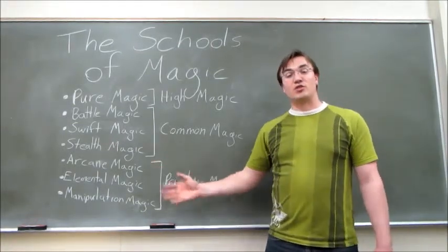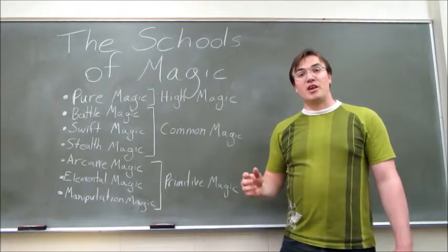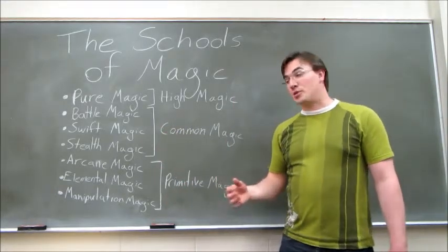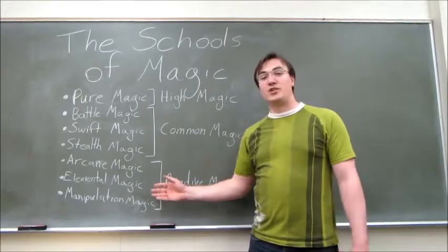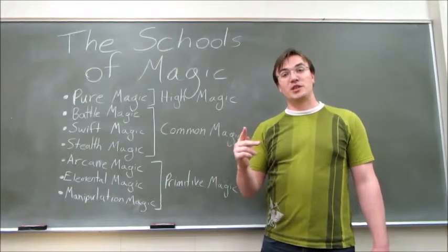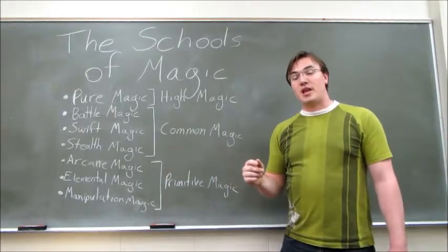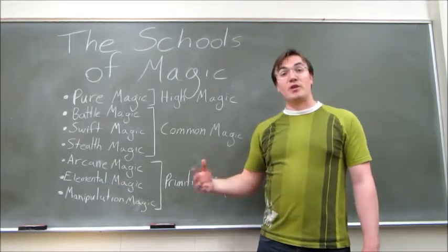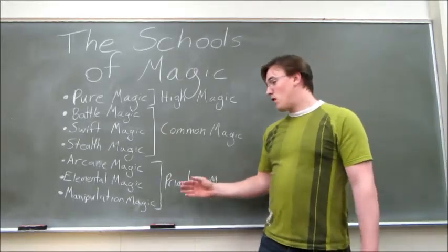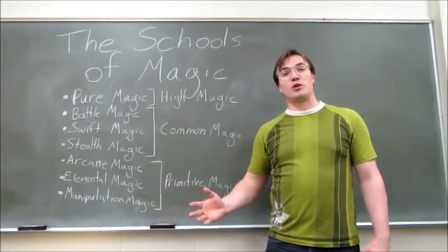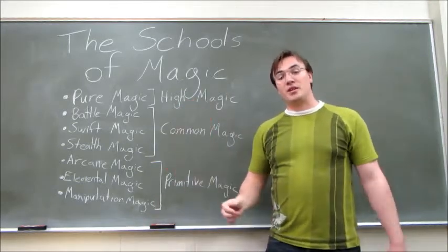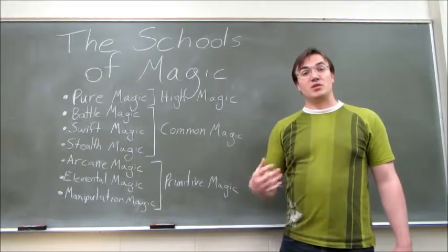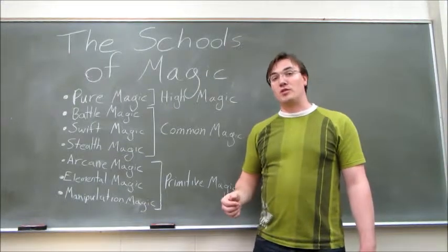There's arcane magic, which uses only the arcane circle and makes the arcs of the arcane circle cheaper. Elemental magic uses only the fingers, the elemental fingers, and allows certain fingers to be free. And manipulation magic uses words to manipulate the elements that exist in the environment, which makes certain syllables free by taking more levels.